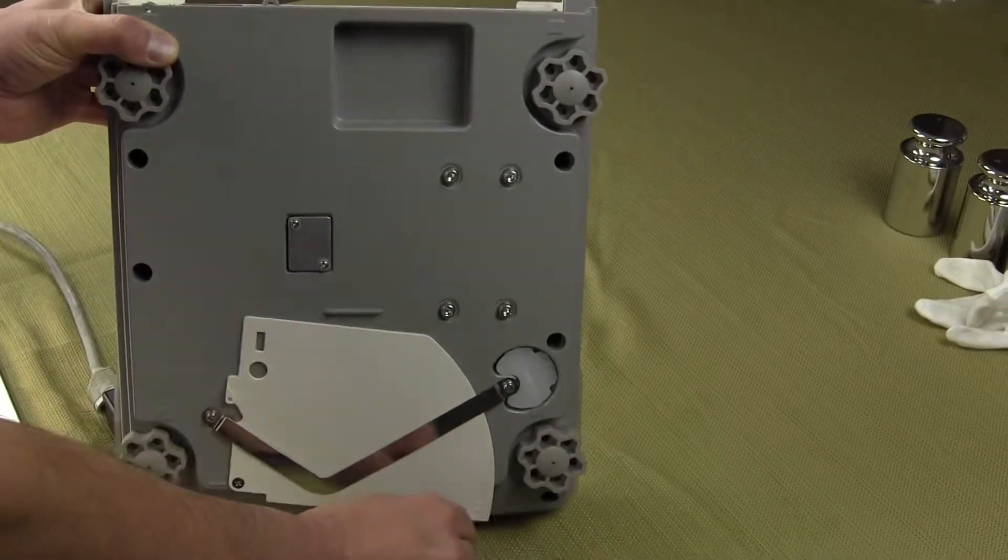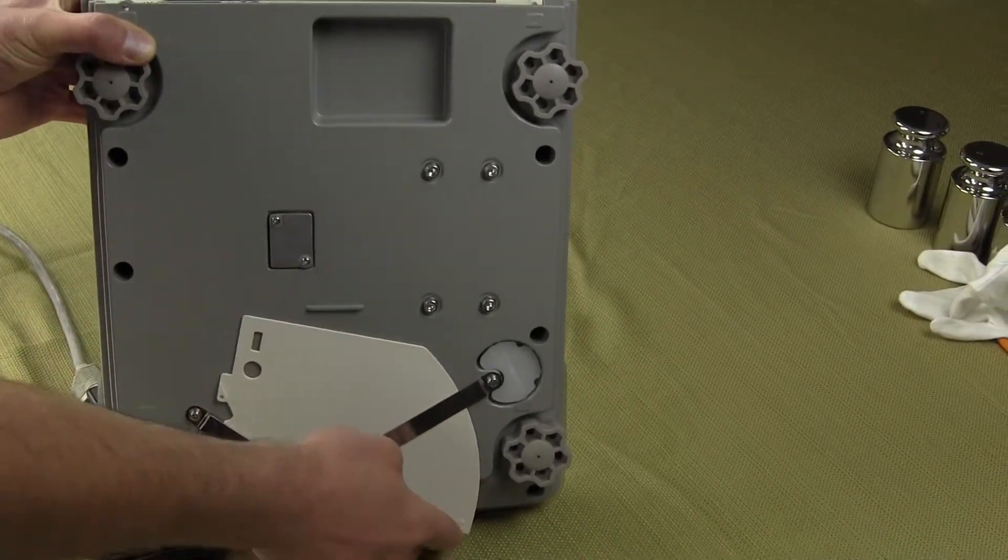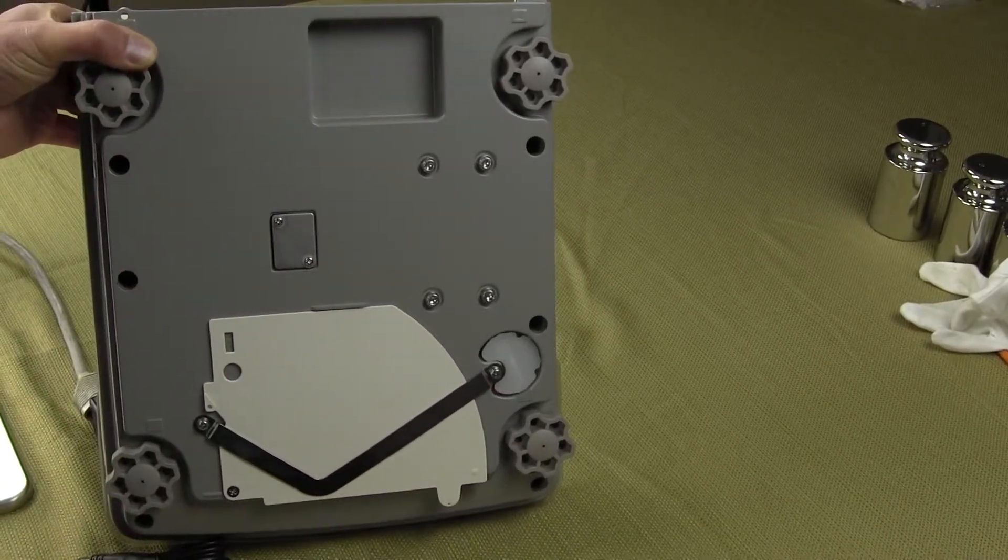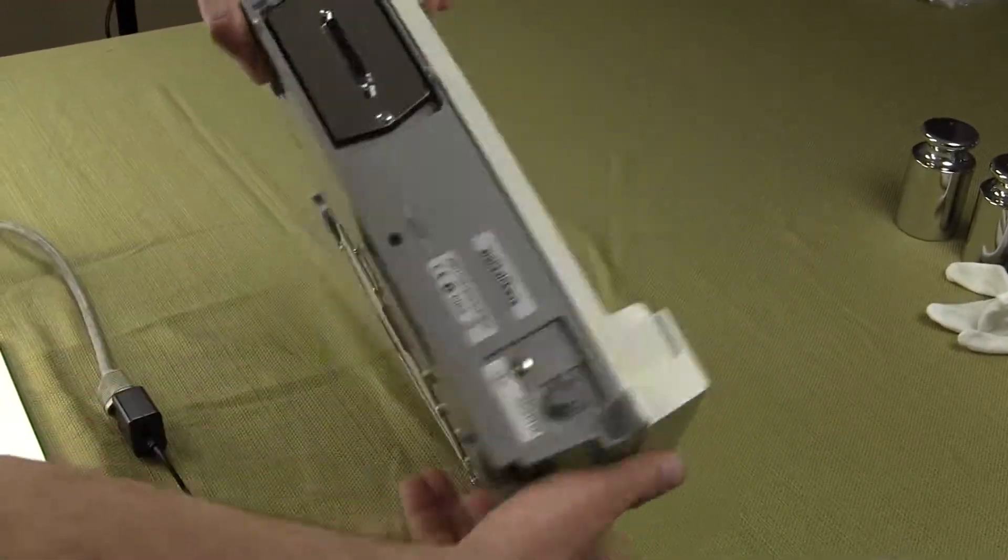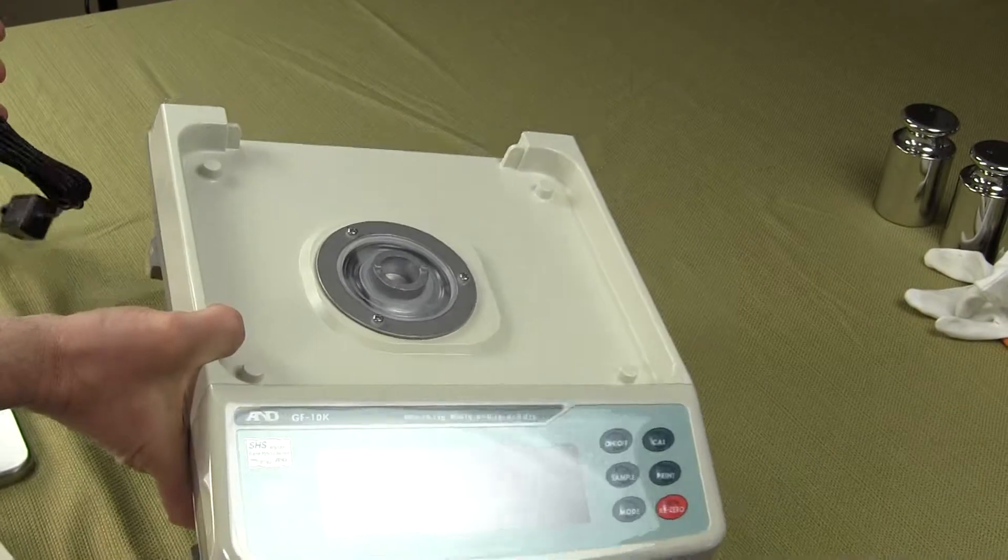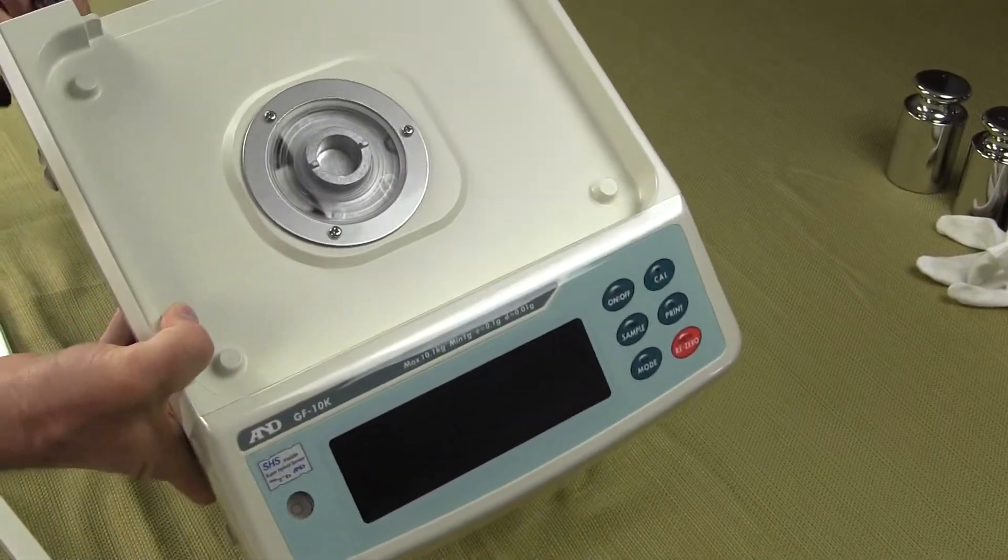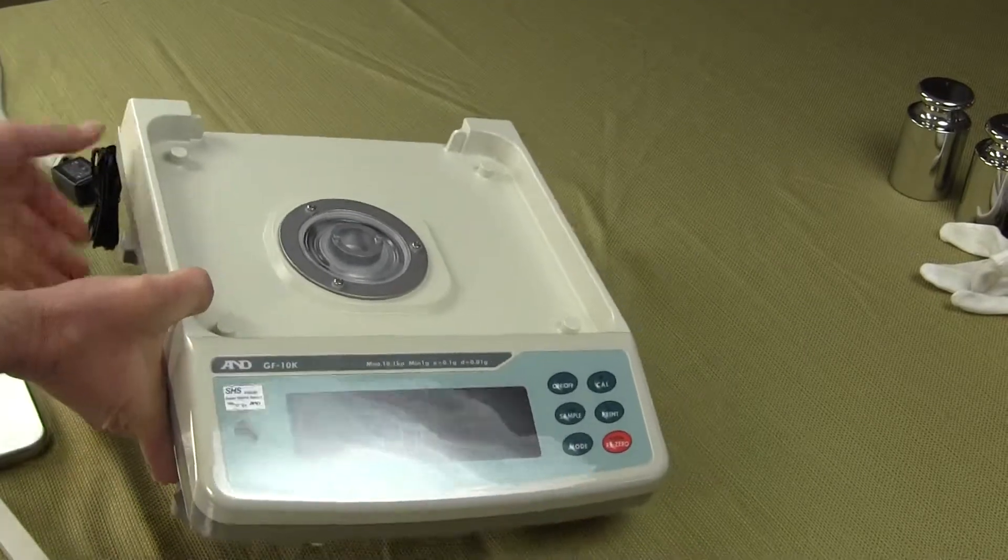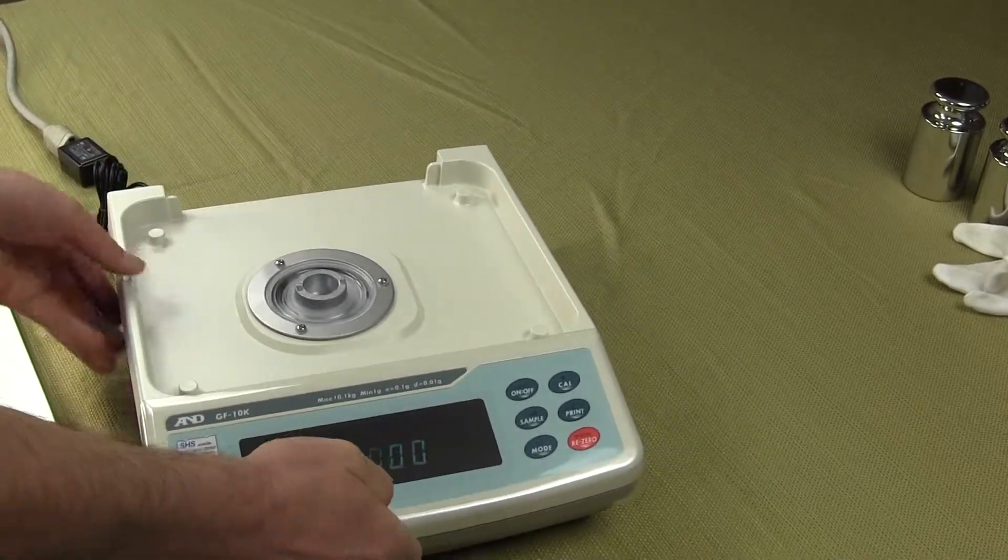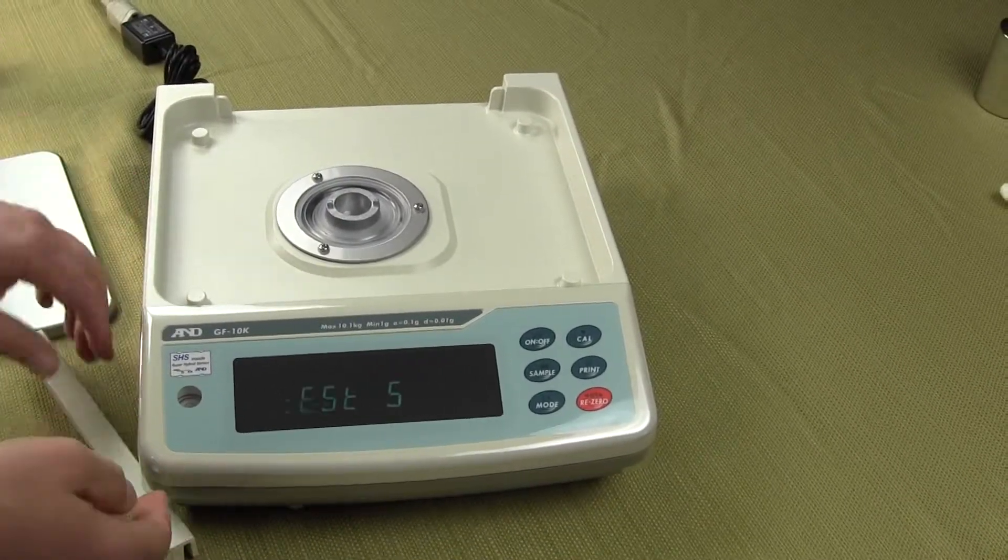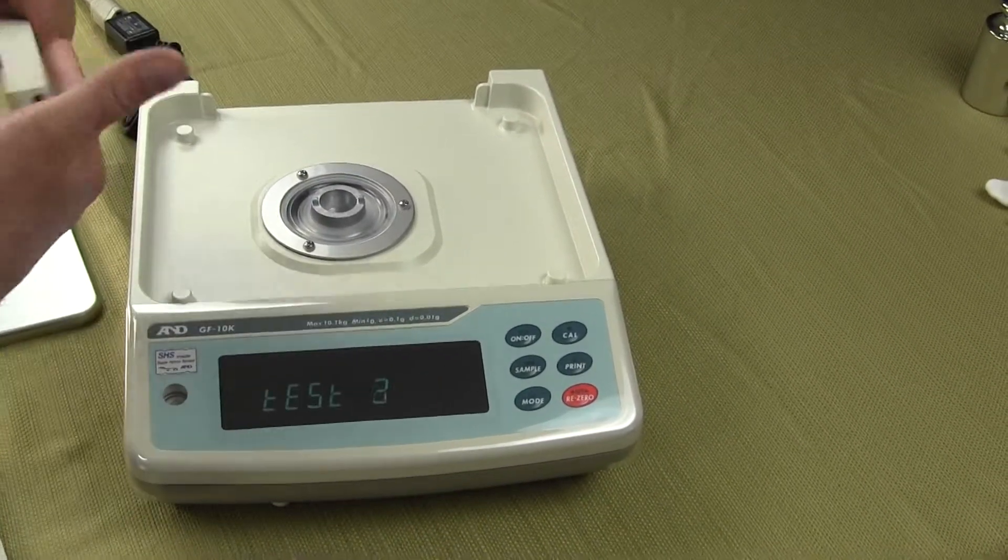At the very bottom, we have a card. I'll turn this over and show you. This is basically a cheat sheet on how to use the balance. So you don't have to go find your manual. Everything's right there. This is a heavy unit. Let me just plug this back in so we can go over some more of the functions. There's no plastic on this housing at all. This is all the cast aluminum housing.